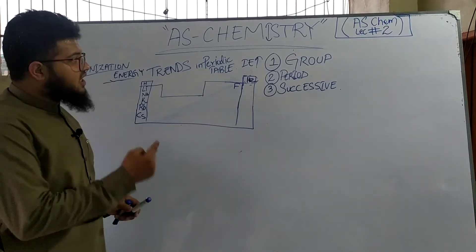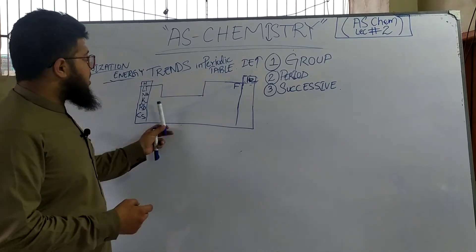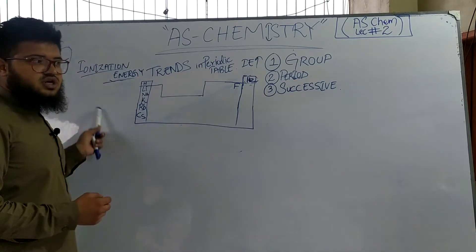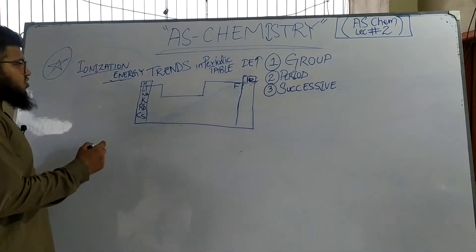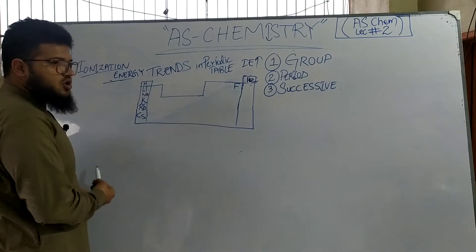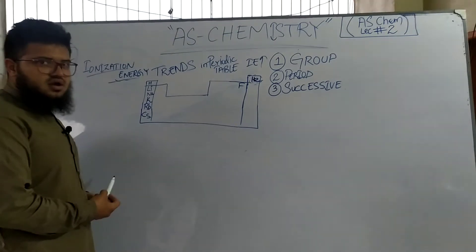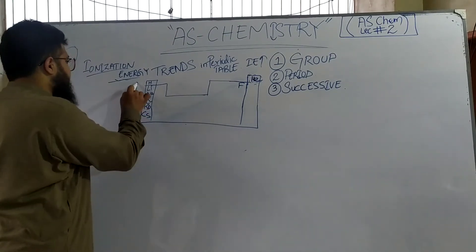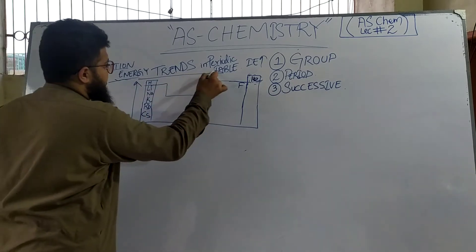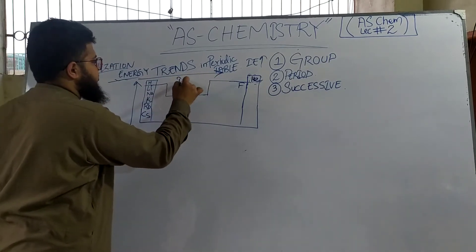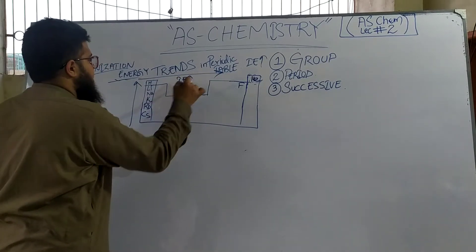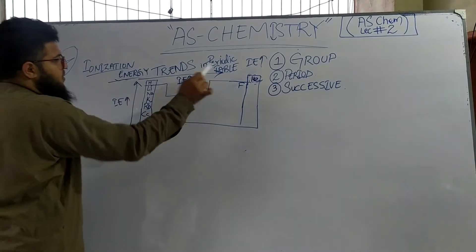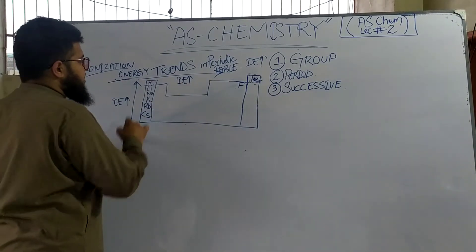Welcome back. This is Lecture 2, and we are going to study the trends of ionization energy in the periodic table. In this periodic table, if we go up the group or across the period, ionization energy will increase. Ionization energy will increase in both cases — going up the group and across the period.